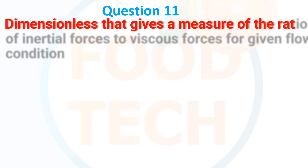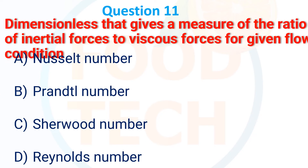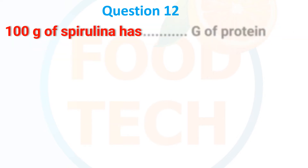Next MCQ: The dimensionless number that gives a measure of the ratio of inertial force to viscous force for a given flow condition is which? Options: (A) Nusselt number, (B) Prandtl number, (C) Sherwood number, (D) Reynolds number. The correct answer is D — Reynolds number.